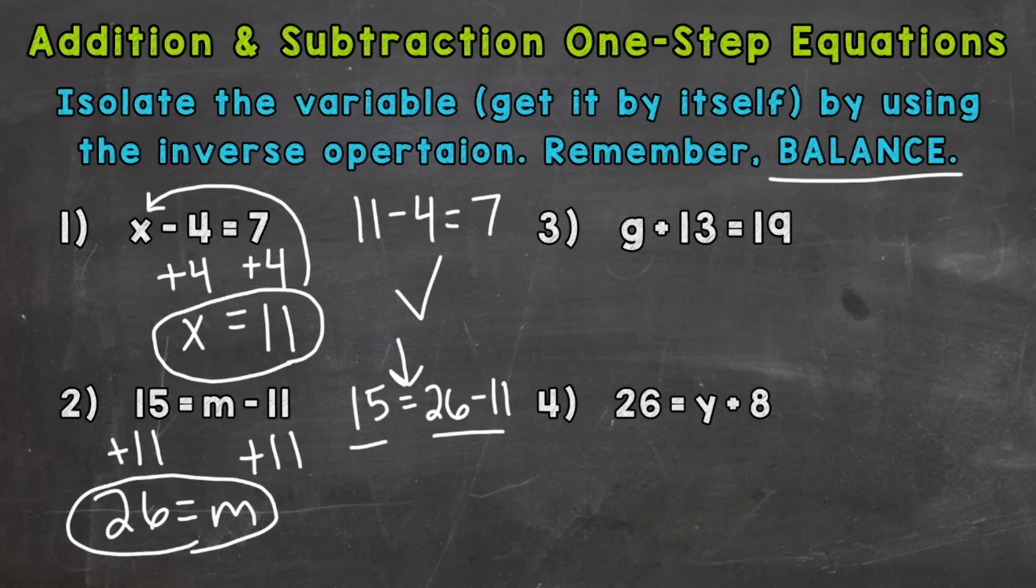On to number three, where we have g plus 13 equals 19. So we need to isolate the g, the variable. We are adding 13. So the opposite of adding 13 would be subtracting 13. That way, those 13s cancel out. But remember, whatever we do to one side, we have to do to the other. So subtract 13 from the right, that 19 over there. g is now isolated. And we have 19 minus 13, which gives us 6. So g equals 6. And we'll plug back in. 6 plus 13 equals 19. So that's true. And we have the correct answer.